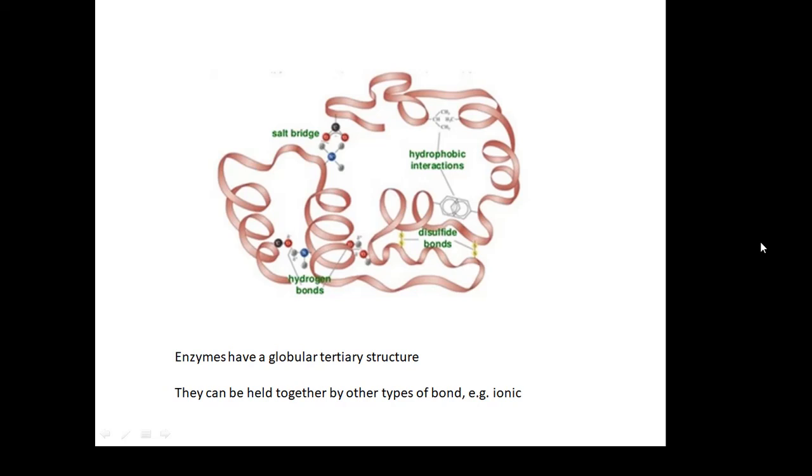The tertiary structure: it's globular, it's like a ball, a globe, and these secondary structures are tangled together into a blob. These can be held together by other types of bond, for example, ionic bonds.